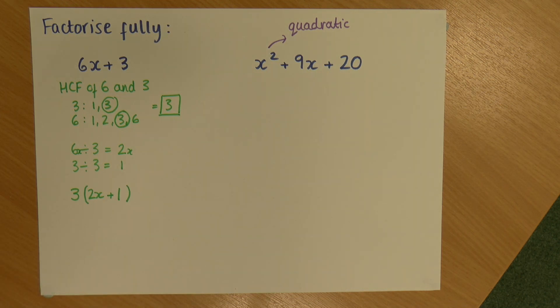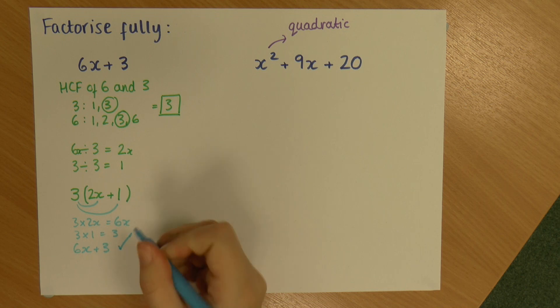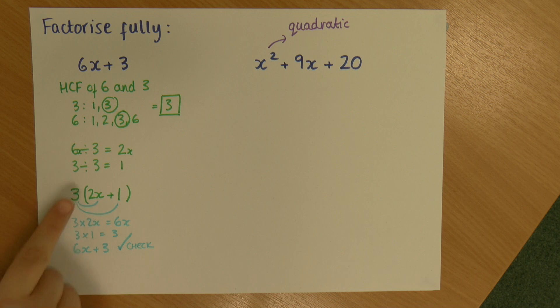Now I can check if I want to that this is correct by multiplying out. So I can do 3 times 2x which is 6x, and 3 times 1 which is 3, and that gives me 6x plus 3 which is what I started with. So my check is correct. So I know this here is my answer, my factorised answer.